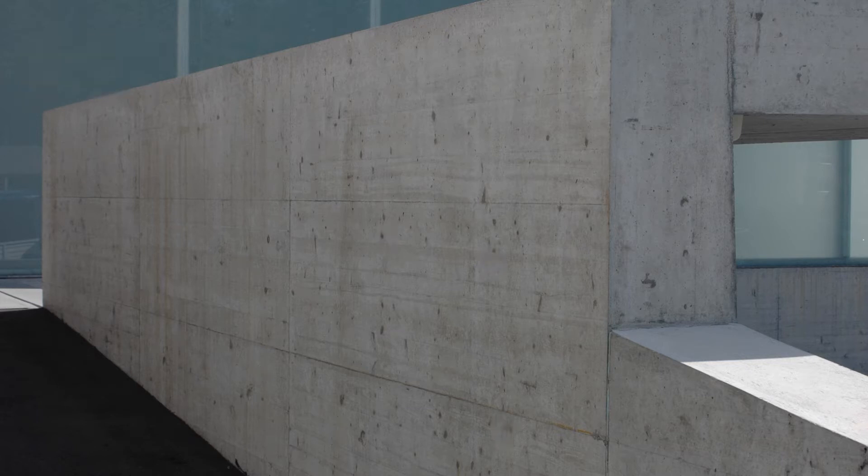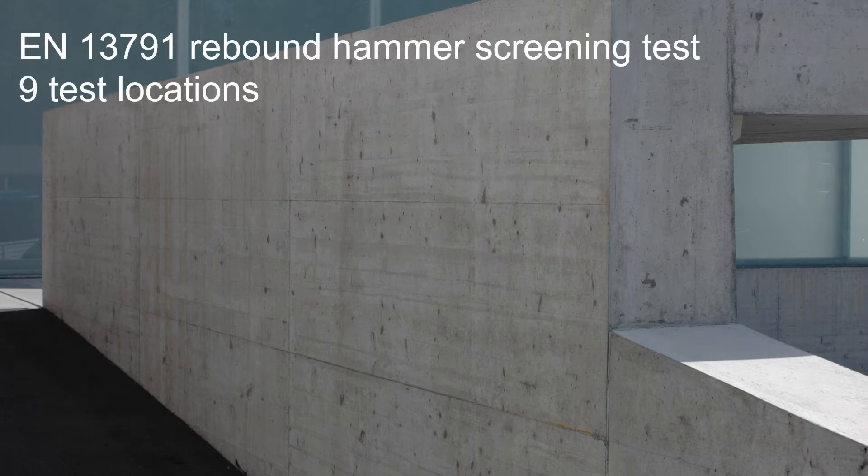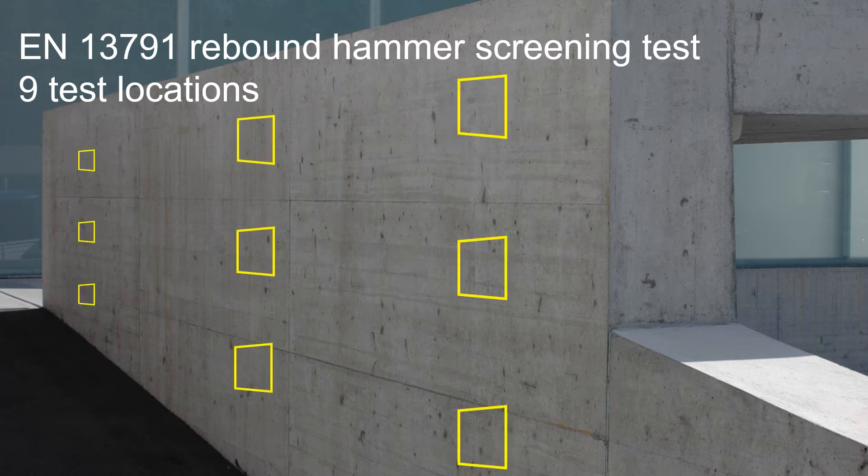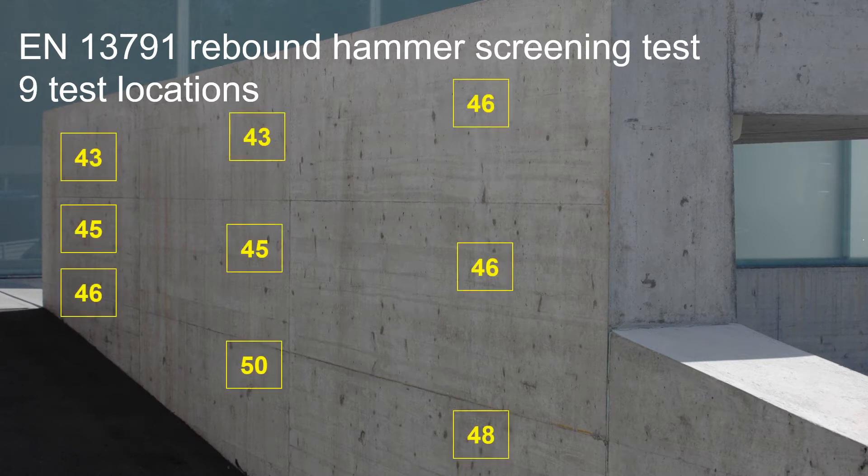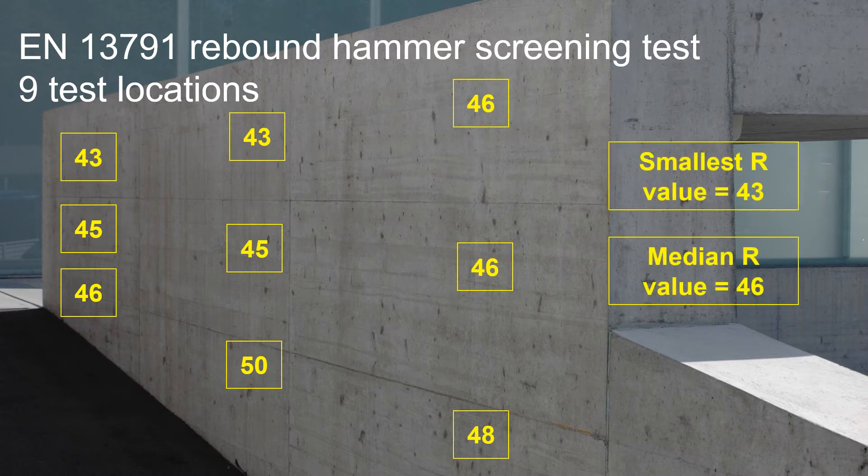The alternative method requires a minimum of nine test locations. At each test location, we have to determine the rebound number and then we need to determine which is the smallest rebound number and also the median of all rebound numbers.